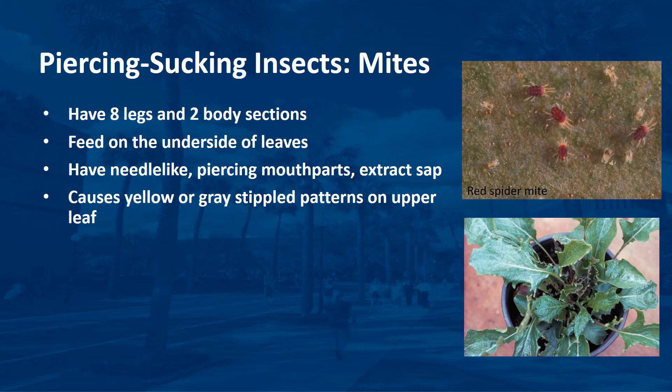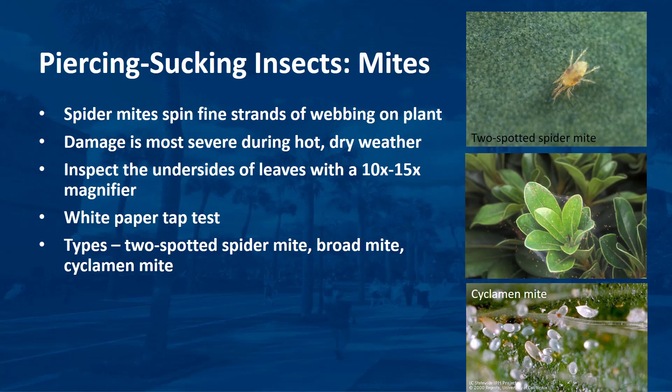Mites are relatives of insects, more closely related to spiders and ticks. Adult mites, spiders, and ticks have eight legs and two body sections, whereas adult insects have six legs and three body sections. Adult mites feed on the underside of leaves. You often do not know these very tiny mites are present until damage appears. Mites have needle-like, piercing mouthparts that insert into leaves and extract plant sap. Damage from a few mites appears as yellow or gray stipple patterns on the upper leaf surface. Some mites, such as spider mites, spin fine strands of webbing on the host plant. Webs may also entirely cover branches or plants. Large populations of mites cause the leaves to turn yellow, gray, or brown, and leaves may drop early. Damage is most severe during hot, dry weather.